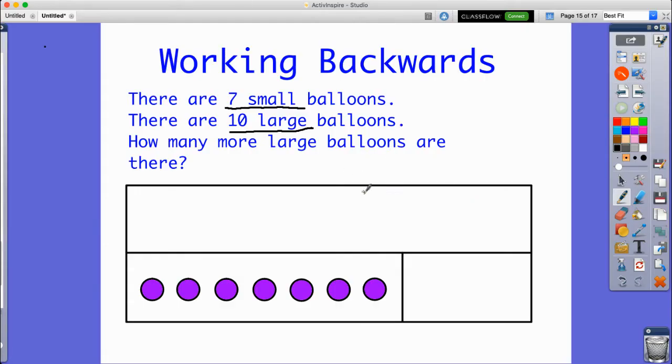This problem is a little tricky because the model here doesn't give me a whole. It actually only gives me these down here. But what I'm going to do is I'm going to count these to find out what these purple ones represent. One, two, three, four, five, six, seven. Since there's seven of these, they must represent the small balloons.